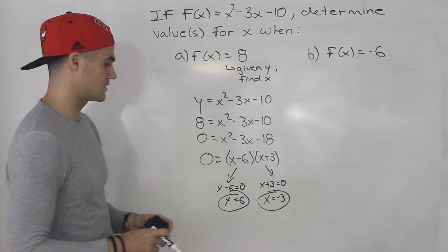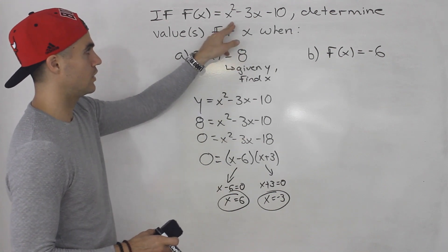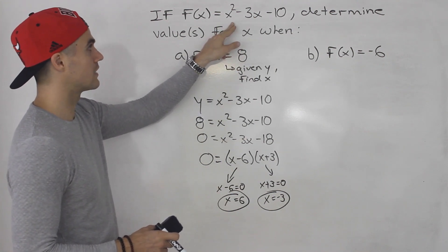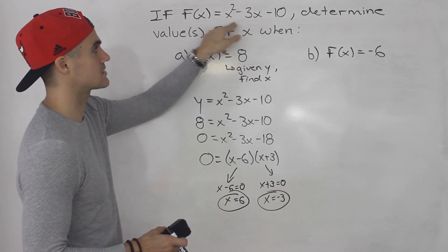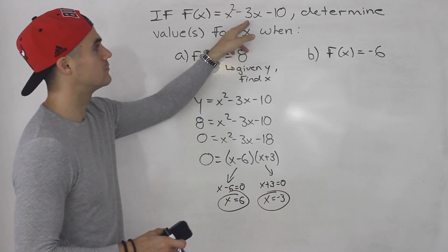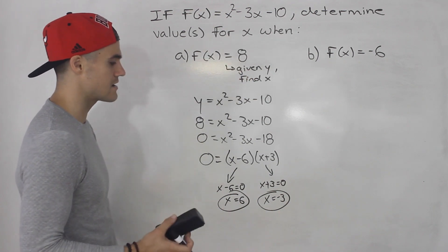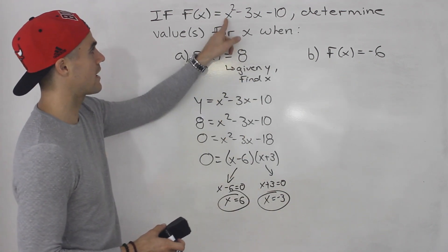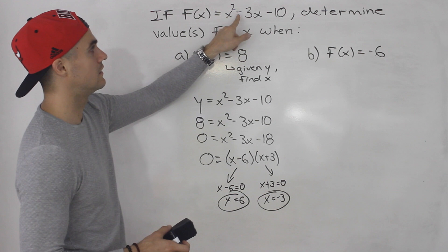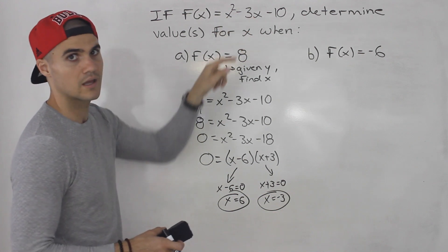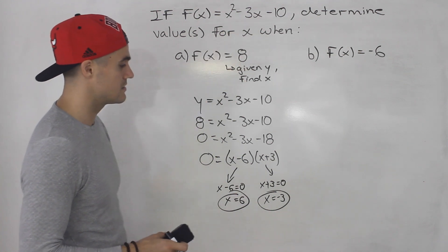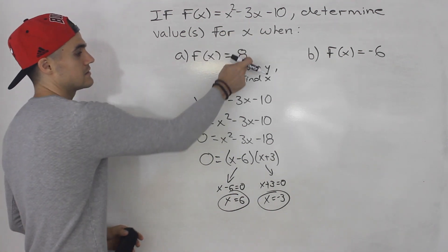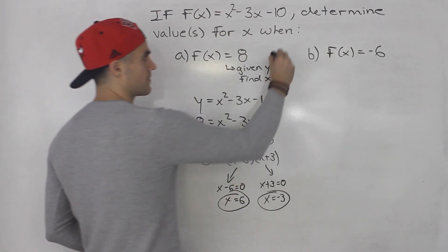And you could check your answer. You could take 6, plug it in to the function and see if you get 8. So 6² minus 3 times 6 which is 36 minus 18 which is 18 minus 10 gives us 8. If we plug in -3 for x, -3² is 9. -3 times -3 is positive 9. So 9 plus 9 is 18 minus 10 gives us 8. So you could always check your answers.